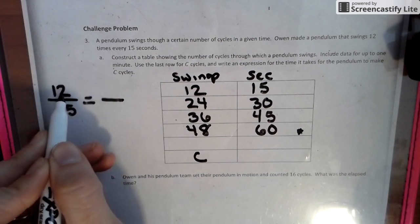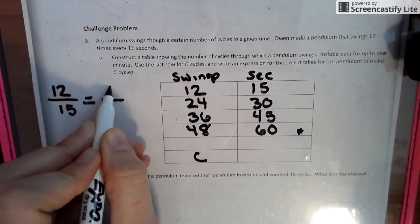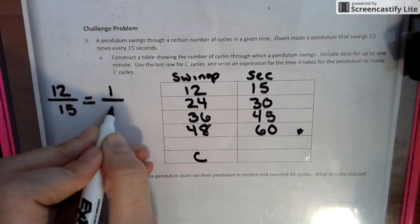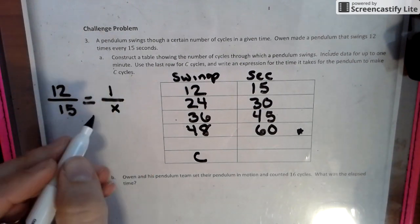whatever we need it to equal. And we need to find out what one swing is. So 12 is the swings. This is the second, one swing. We're missing this amount of seconds.